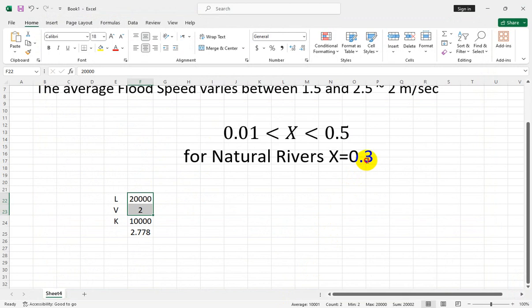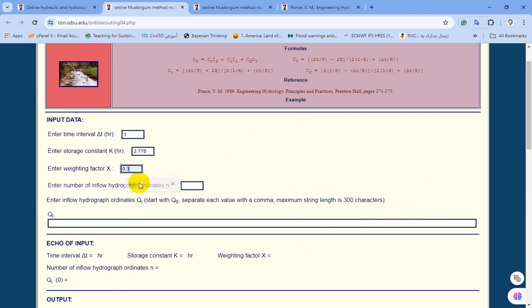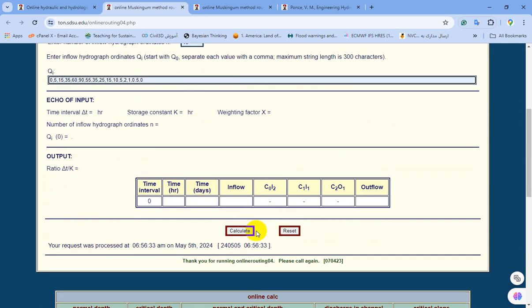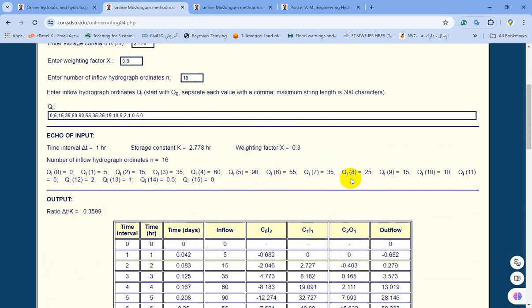For the X value, as I mentioned, you can use 0.3 for most natural rivers. I want to enter an inflow hydrograph with 16 ordinates. This is my input hydrograph, and you should enter this value manually. You need to use a comma or colon to divide numbers from each other. After entering these parameters, you need to click on the Calculate button.